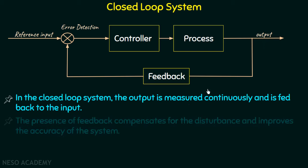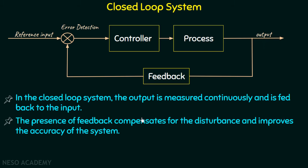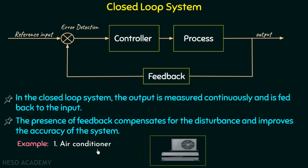In this way, the presence of feedback compensates for disturbance and improves the accuracy of the system. An air conditioner is a very good example of a closed loop system. It continuously monitors the temperature inside the room and accordingly turns the compressor off and on in order to maintain the desired temperature.